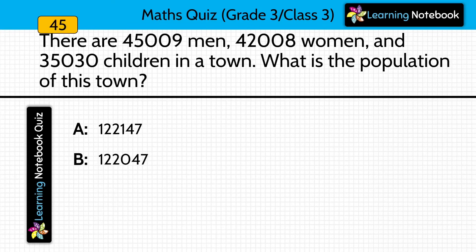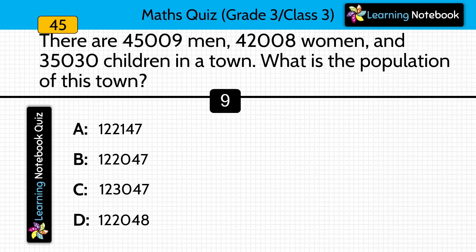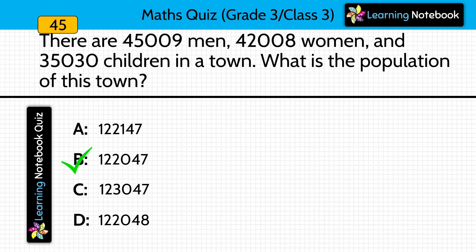There are 45,009 men, 42,008 women and 35,030 children in a town. What is the population of this town? Answer is option B, 122,047. We will add all these 3 numbers to find the population of this town.